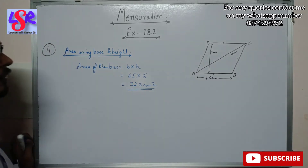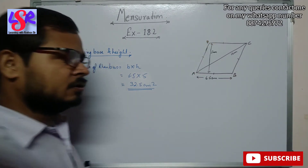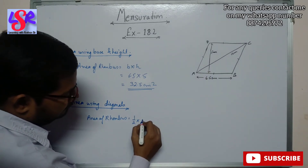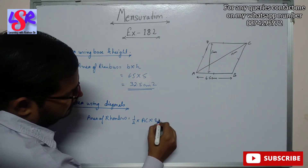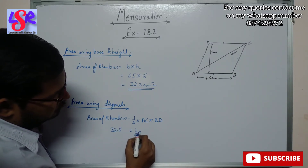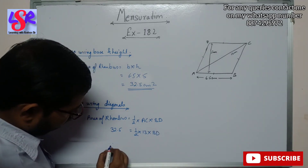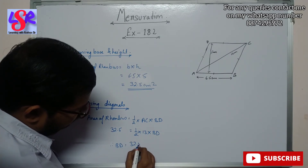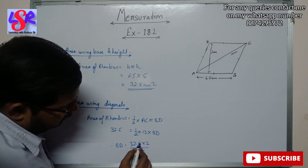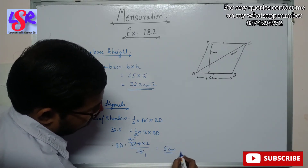Now using the diagonal formula with the area we found: area of rhombus = 1/2 × AC × BD. So 32.5 = 1/2 × 13 × BD, giving BD = 32.5 × 2 / 13 = 65 / 13 = 5 centimeters.